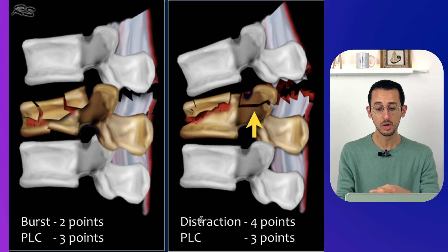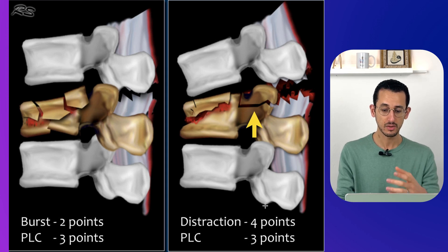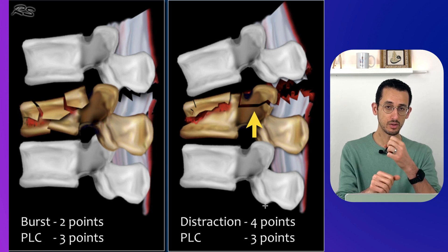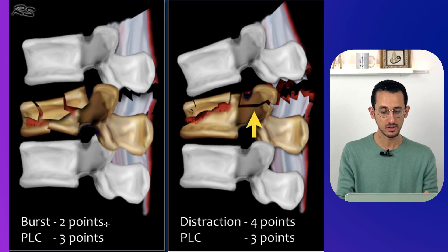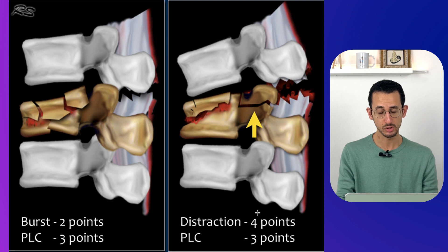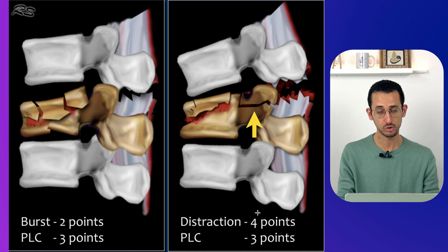Sometimes it becomes tricky to identify injury to the ligamentous structures and the morphology of the injury. We might ask: is that a burst fracture so severe it led to posterior ligamentous complex injury? Or was it a distraction injury that caused injury to the posterior element, with the force also leading to a compression fracture? Either way, the first case on the left would take about five points, and the right side about seven points — both are four-plus and likely require surgical intervention.